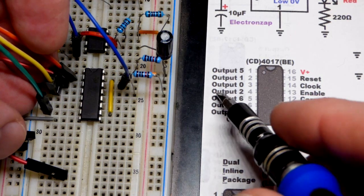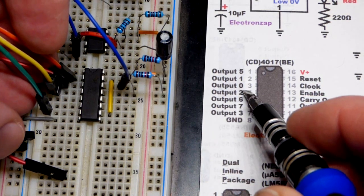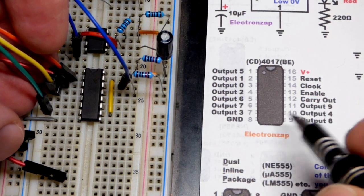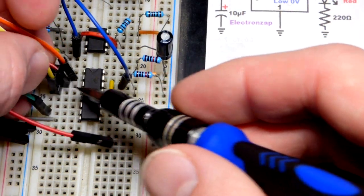When we first apply power, output 0 here is high, the rest are low. So that's the red jumper there.